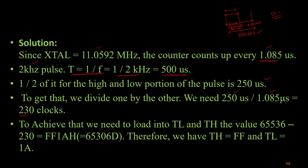These 230 clocks have to be subtracted from the maximum count FFFF. 2 to the power 16 equals 65,536 in decimal. Subtracting 230 from 65,536 gives 65,036, which in hexadecimal is FF1A. So the value to be loaded: TH1 gets the higher byte FF, and TL1 gets the lower byte 1A.